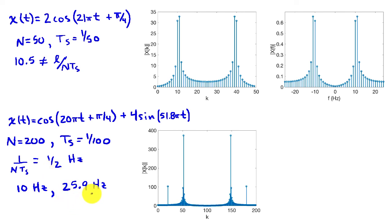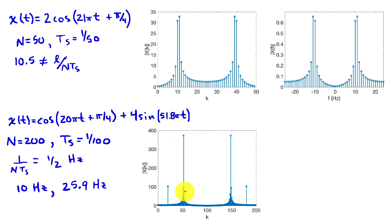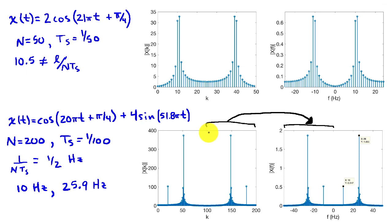We expect many terms associated with approximating the 25.9 hertz sinusoid, with the peak amplitude near k equals 52, representing 26 hertz. Indeed, there is a single coefficient at k equals 20 corresponding to the cosine, while the sine requires a large number of non-zero coefficients with amplitude roughly four times larger. The upper half of the DFT coefficients from k equals 100 to 199 are mapped to negative frequencies, the axis is scaled, and the amplitudes are divided by N equals 200.